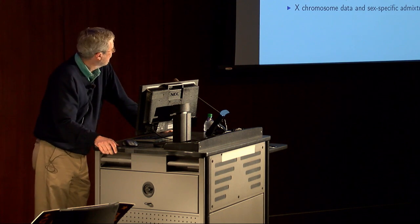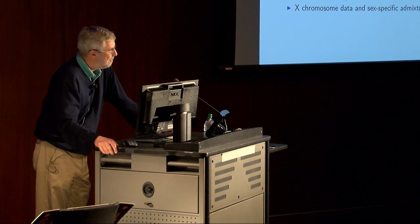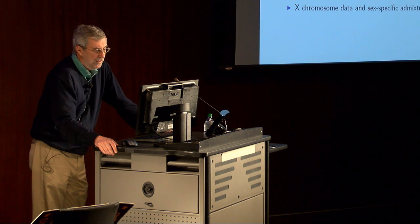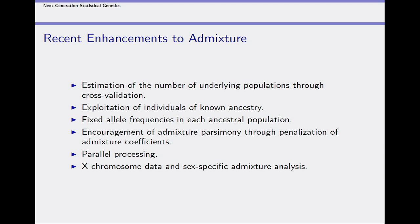We kept improving Admixture. Now you can estimate the number of underlying populations using cross-validation, exploit individuals of known ancestry, fix allele frequencies in ancestral populations, encourage admixture parsimony — pushing estimates like 0.001% African to zero — use parallel processing, and perform X chromosome and sex-specific admixture analysis.